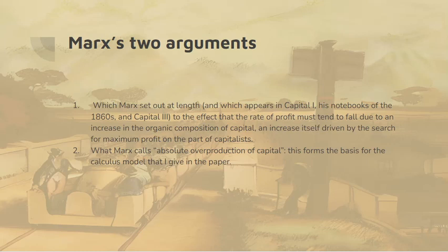This increase in the organic composition of capital is itself seen as due to the search for maximum profit on the part of capitalists. There's a second account by Marx, which is in terms of the overproduction of capital. In the paper, I'll give a calculus model of that and show that it leads to very accurate predictions.